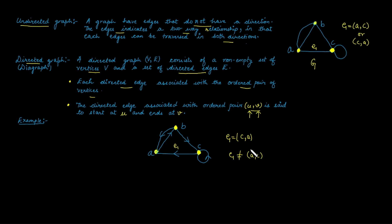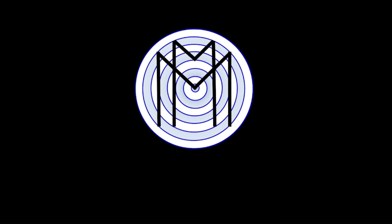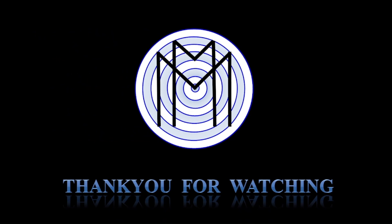In summary, in the case of a directed graph, the order of vertices used to represent the edge matters, whereas in the case of an undirected graph, the ordered pair of vertices does not matter to represent the edge.